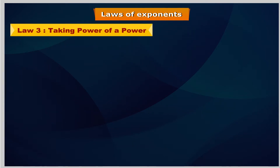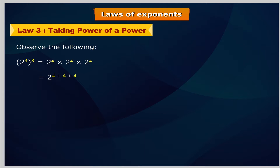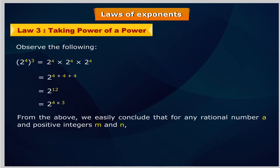Law 3: Taking power of a power. Observe the following: 2 to the power 4, within brackets, to the power 3, equals 2 to the power 4 multiplied by 2 to the power 4 multiplied by 2 to the power 4, equals 2 to the power 4 plus 4 plus 4, equals 2 to the power 4 times 3. From the above, we easily conclude that for any rational number a and positive integers m and n, a to the power m, within brackets, to the power n equals a to the power m multiplied by n.